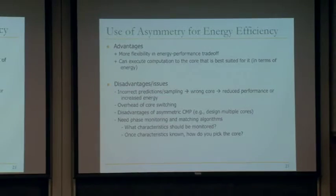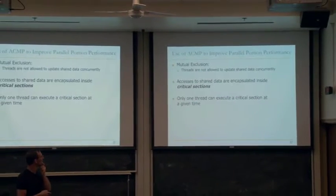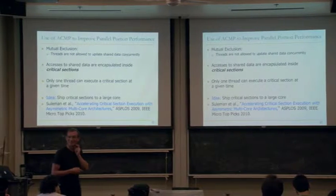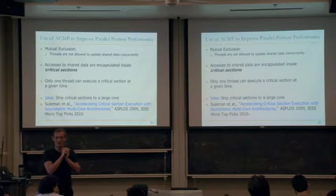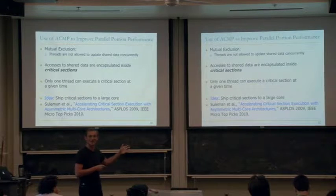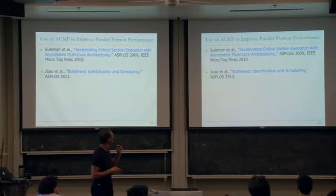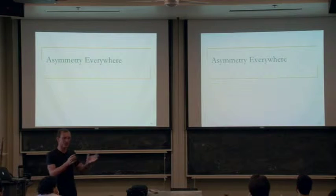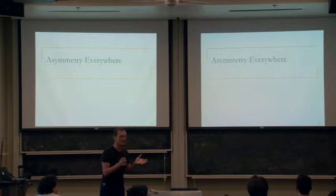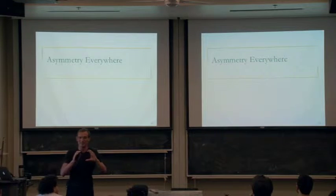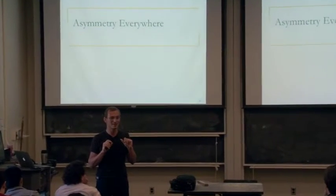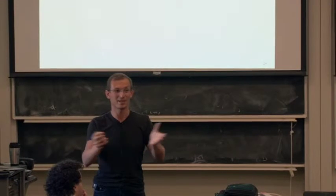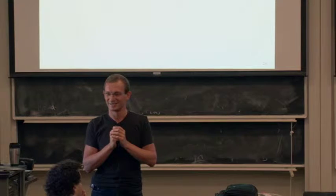We covered using asymmetry for energy efficiency, but you can also use asymmetry to improve parallel portion performance — shifting the critical section to a large core can improve performance in parallel sections. Now I'll switch gears and talk about asymmetry everywhere. So far we've been talking about cores only, but there's nothing fundamental about just cores. Why can't we have asymmetry everywhere in the system? You can have asymmetric caches, asymmetric interconnects, asymmetric memory controllers, and asymmetric memories.